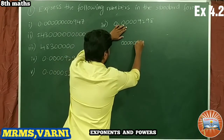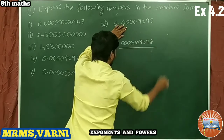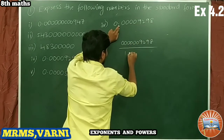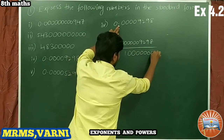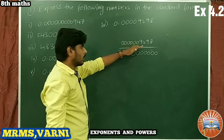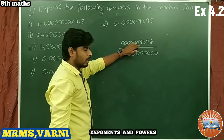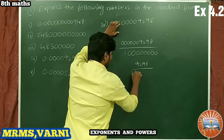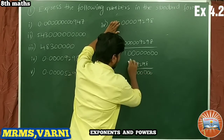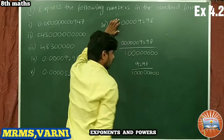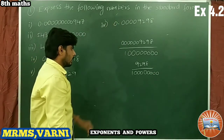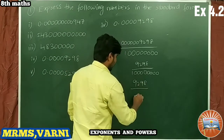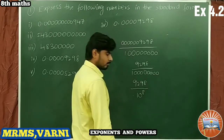Removing the decimal point, we get 9298 divided by 1 followed by 8 zeros. The leading zeros have no value so we drop them, giving 9298 / 10^8, which equals 9298 × 10^(−8).